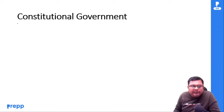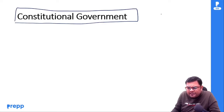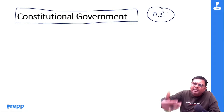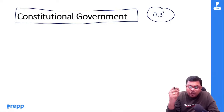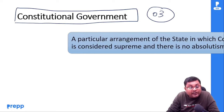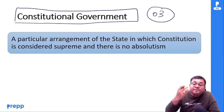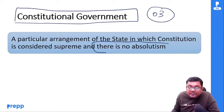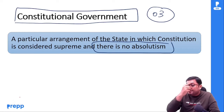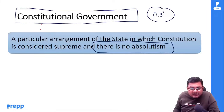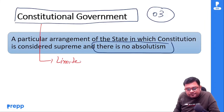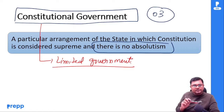अगला topic है what is constitutional government। मैंने कहा था कि what is the primary function of the constitution — to limit the powers of the government। So what is constitutional government? जिसकी power limited होती है, जहाँ there is no absolutism, so that government will be called constitutional government। यह एक limited government होती है।